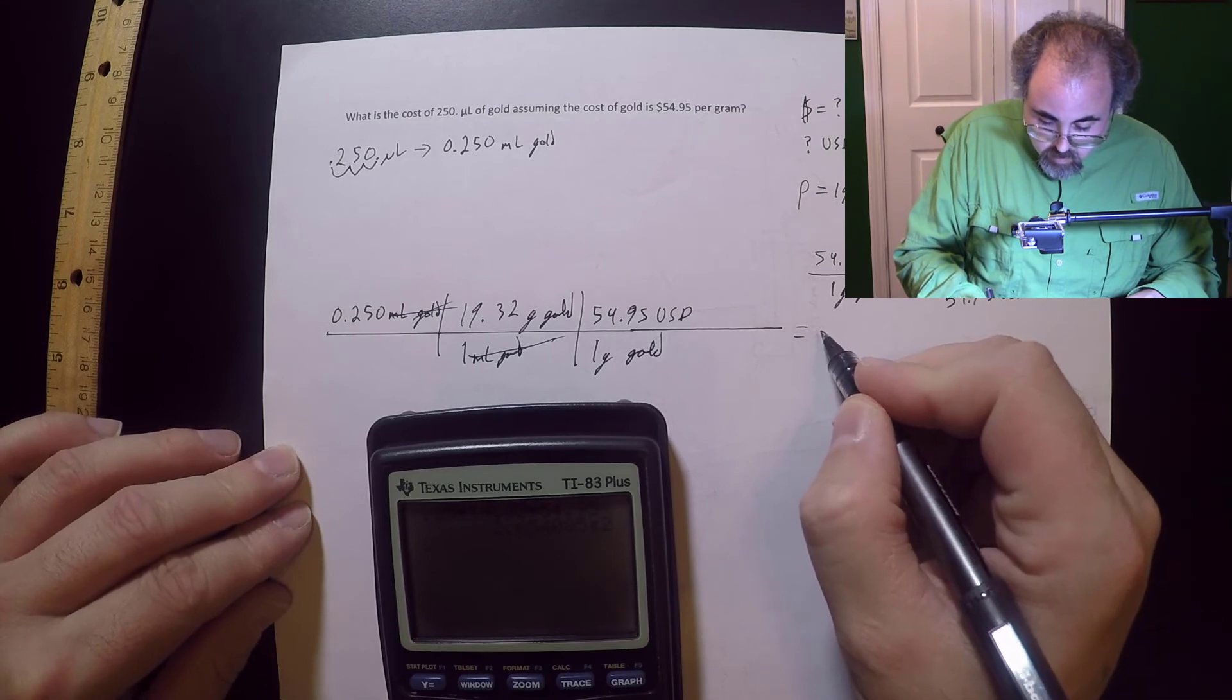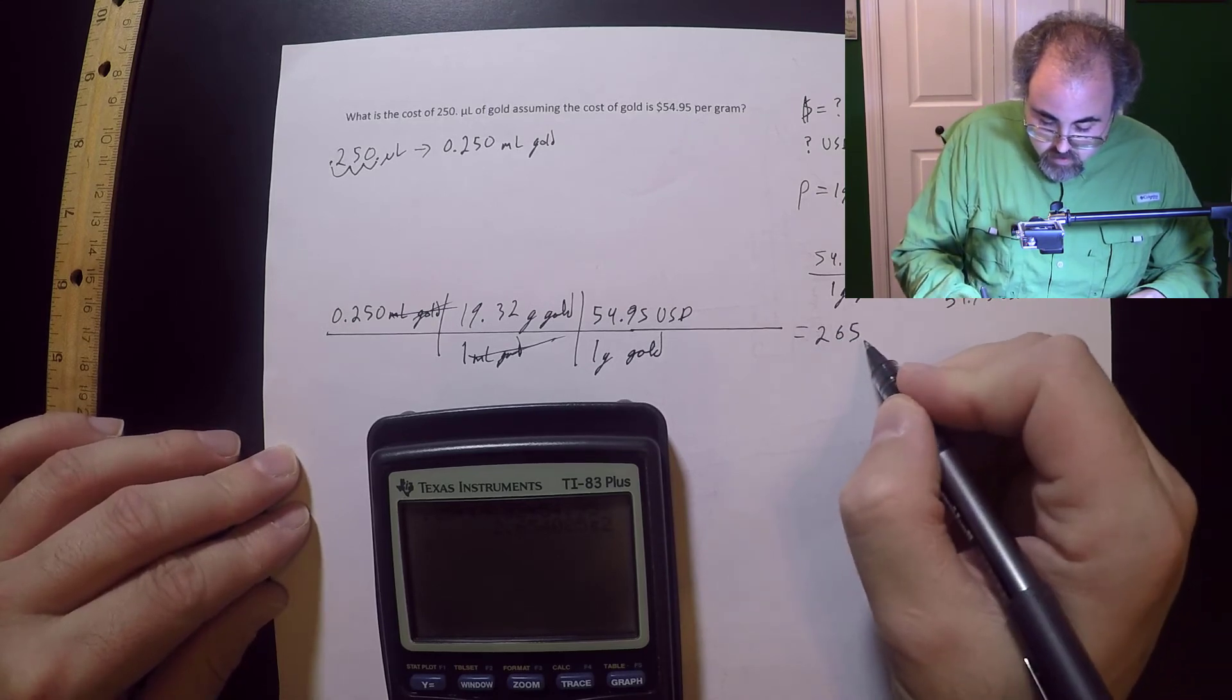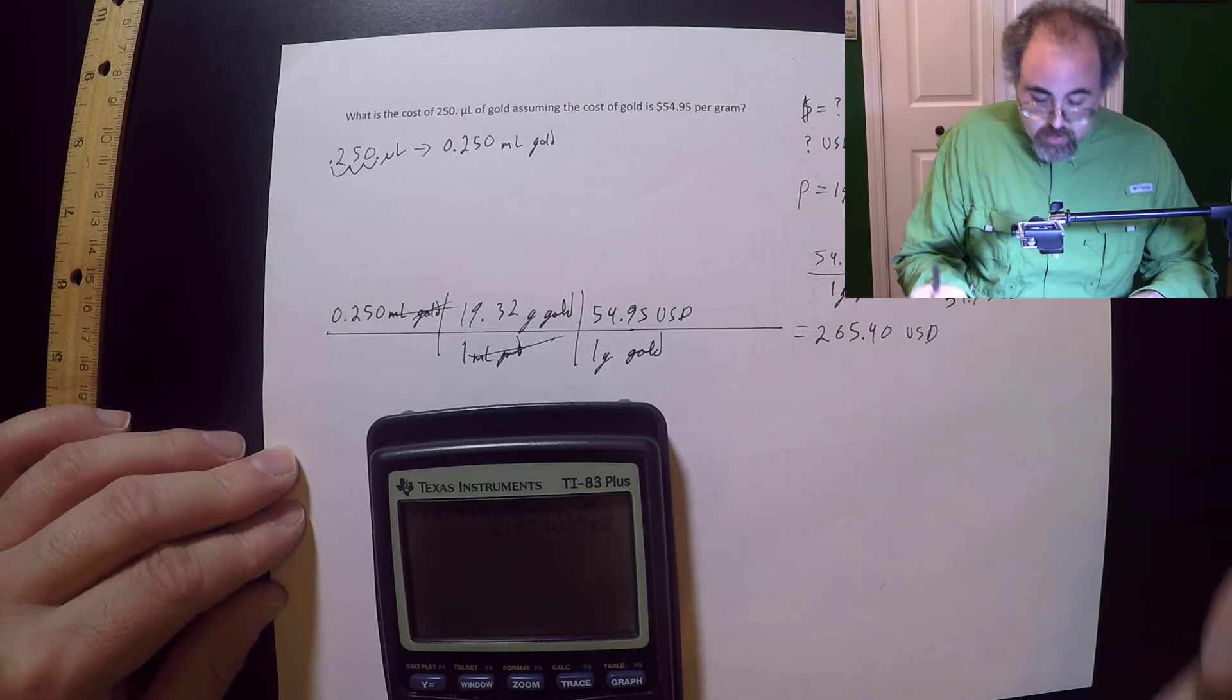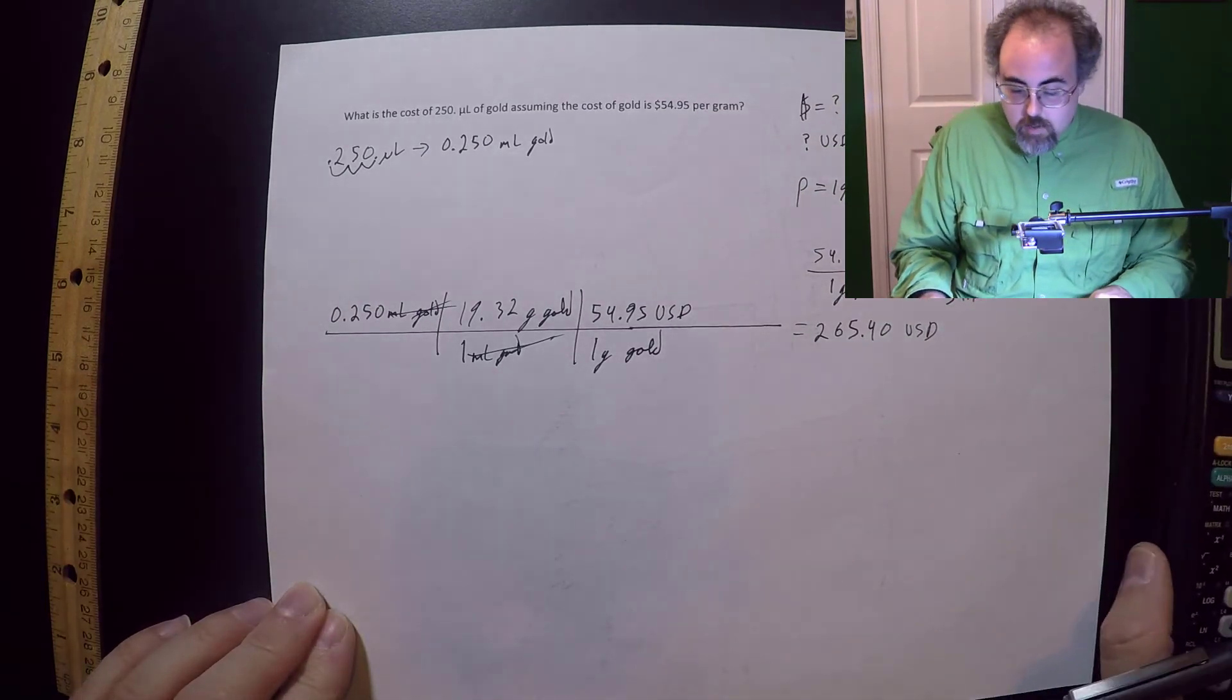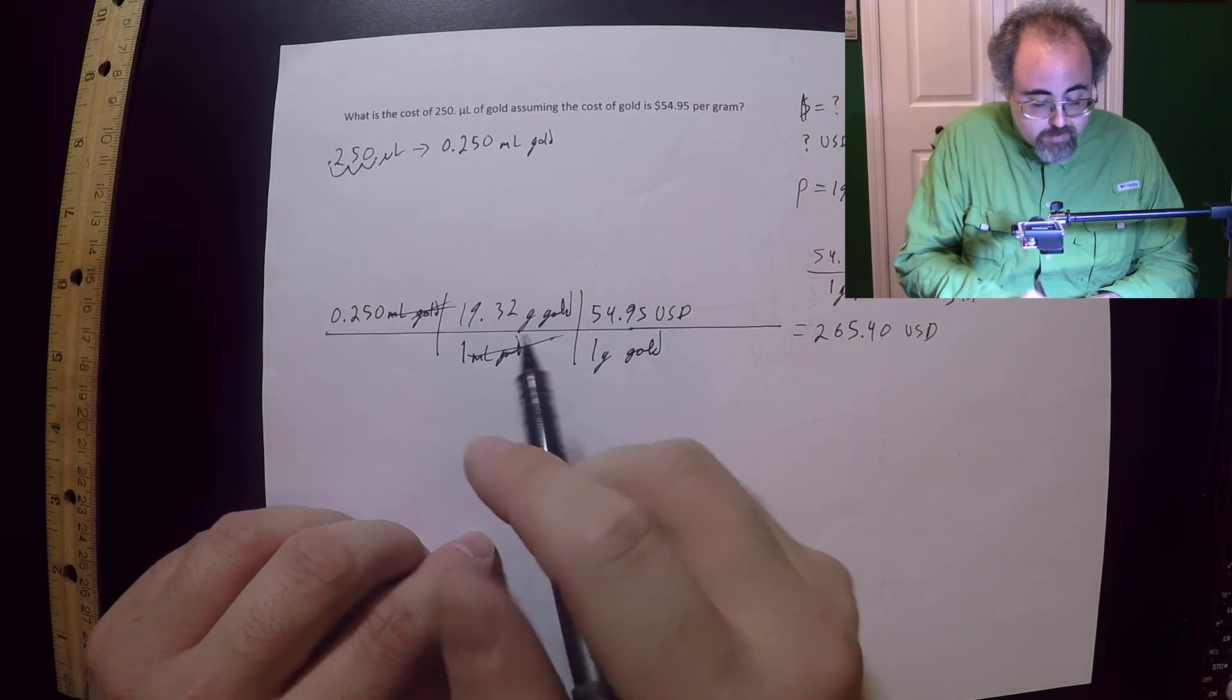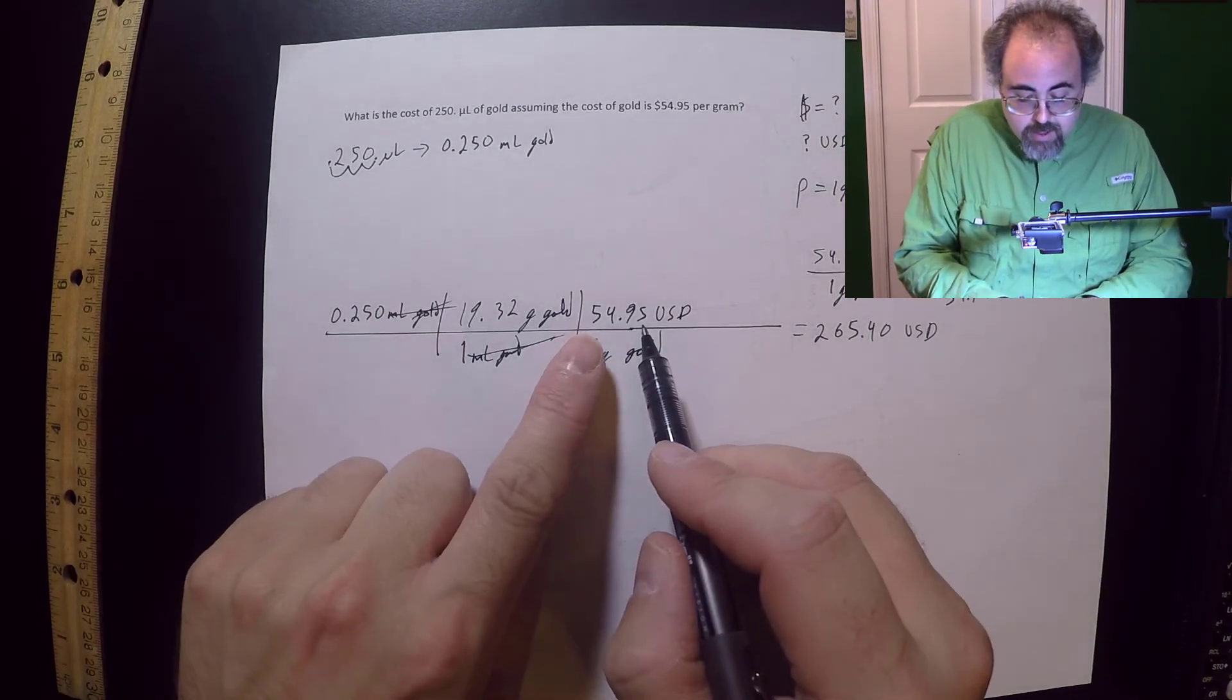Let me put that over there. This is going to equal $265.40. Okay. Now let's talk sig figs. So obviously I'm not going to bother writing anything down below that because currency and because I know good and well, I don't have that many sig figs. I have three significant figures here. I have four here. I have four here.